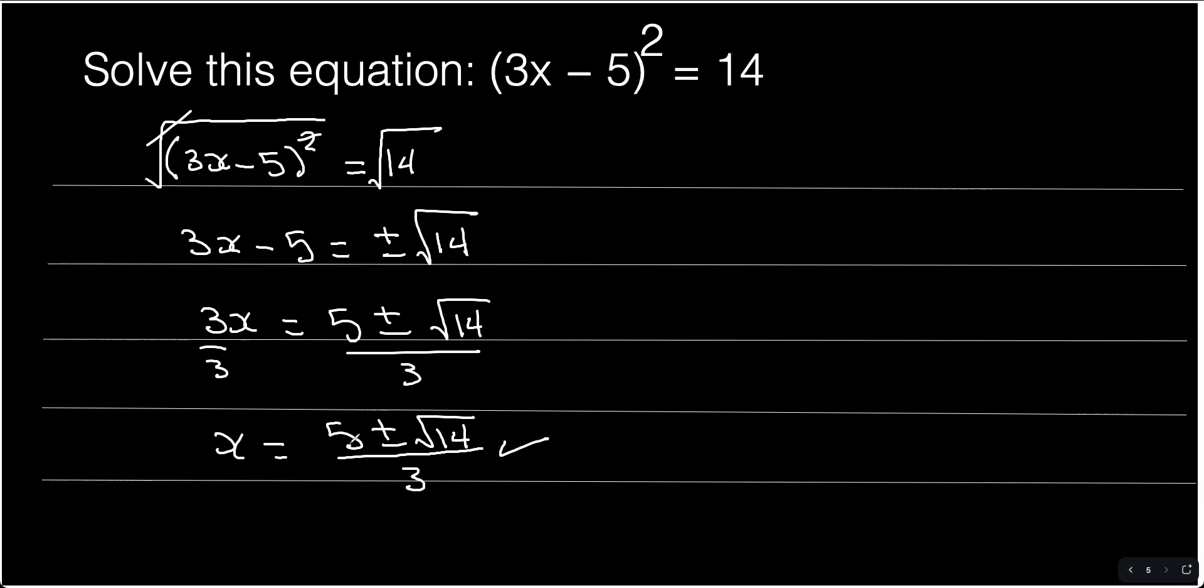If you want this answer in decimal, you just go 5 plus square root of 14, divide it by 3, and then 5 minus square root of 14, divide it by 3. That gives you the two answers in decimals. But this is exact values, and we're going to leave it in exact values.